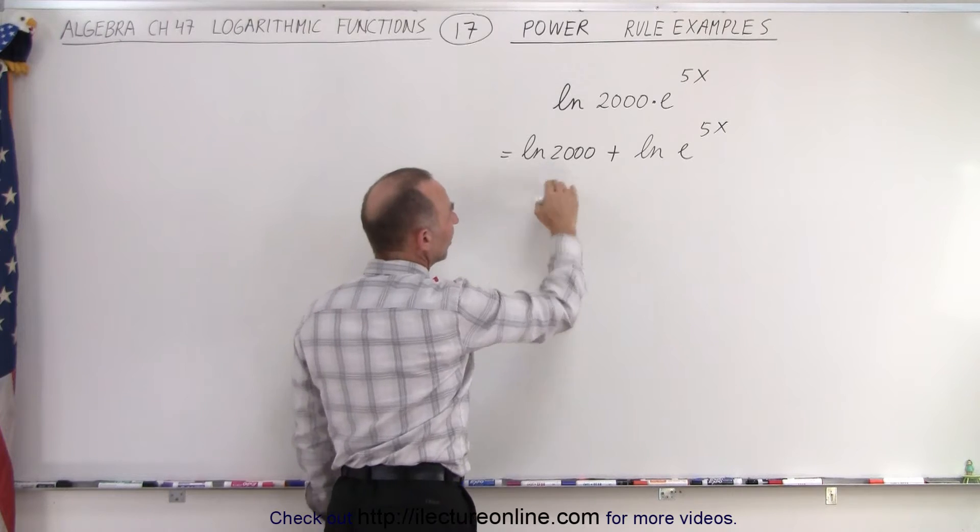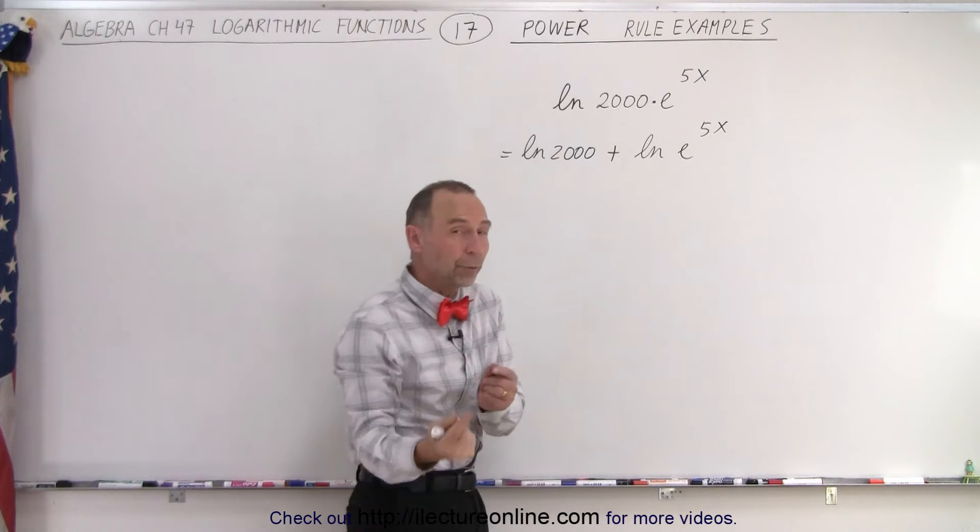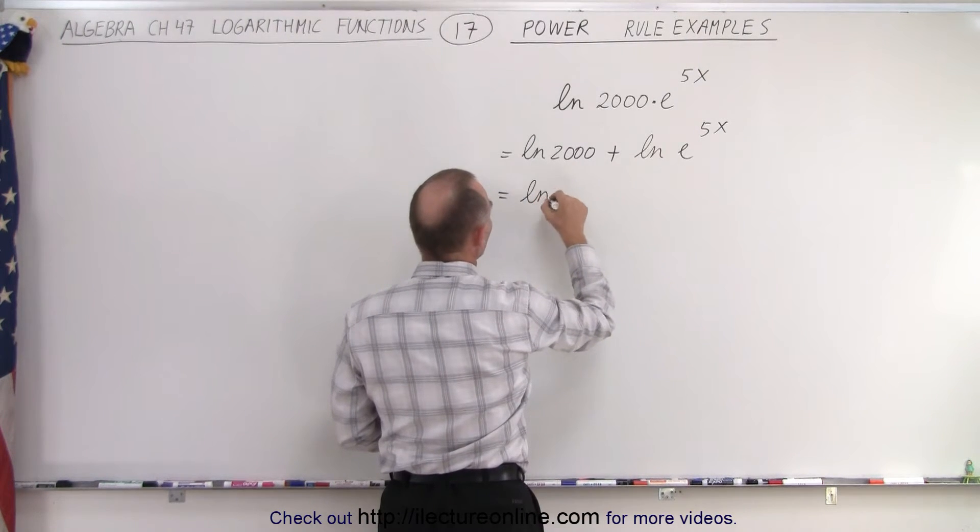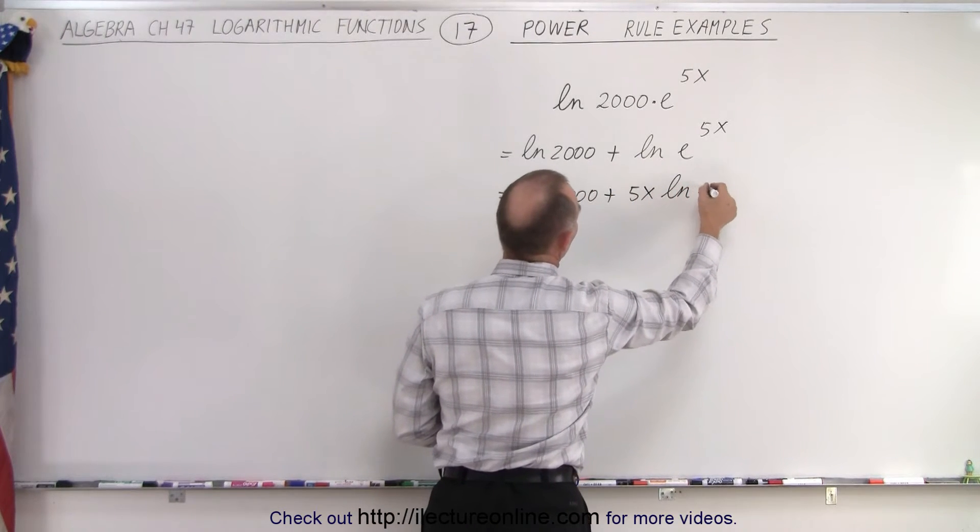Now here this stays the same, but what about the natural log of e to the 5x? This is an exponent using the power rule that goes to the front. So this can be written as the natural log of 2,000 plus 5x times the natural log of e.